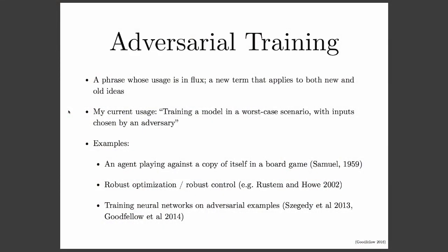This workshop is about adversarial training. The phrase adversarial training is a phrase whose usage is in flux. I first used the phrase adversarial training in a paper called Explaining and Harnessing Adversarial Examples. In that context, I used it to refer to the process of training a neural network to correctly classify adversarial examples by training the network on adversarial examples. Today, other people have started using the phrase adversarial training for lots of different areas — almost any situation where we train a model in a worst-case scenario, where the worst-case inputs are provided either by another model or by an optimization algorithm. So the phrase adversarial training now applies to lots of ideas that are both new and old.